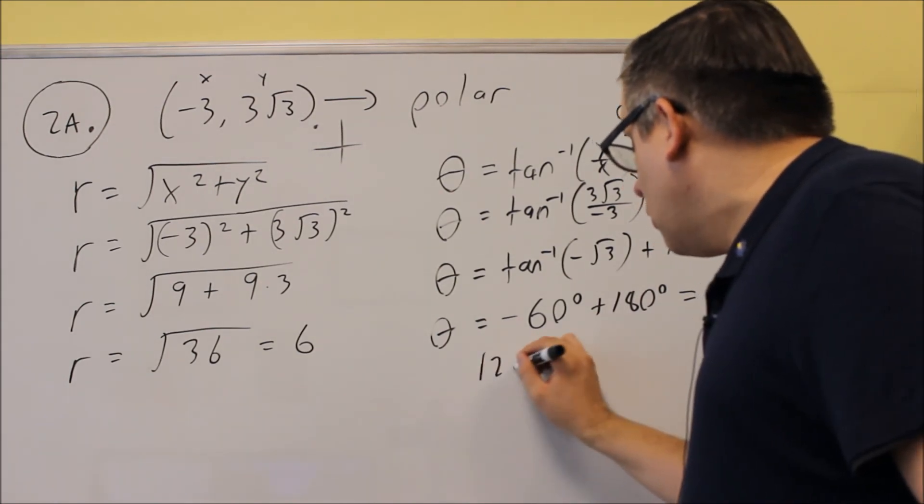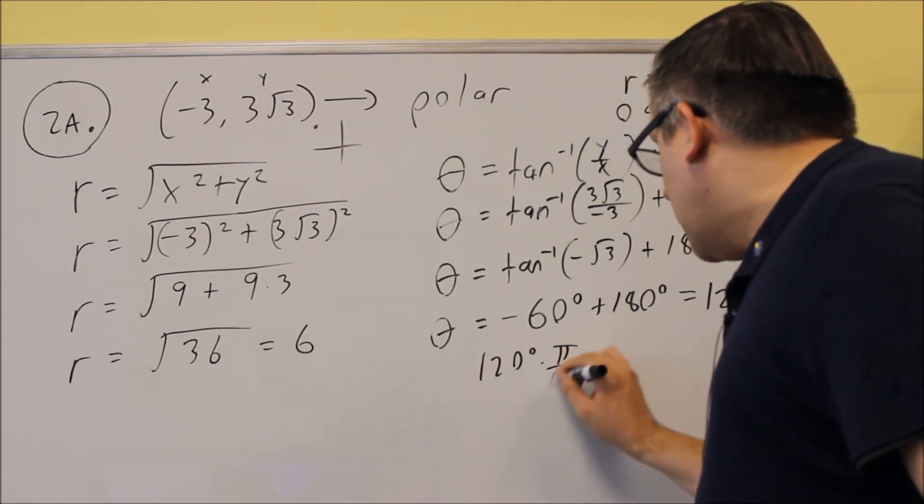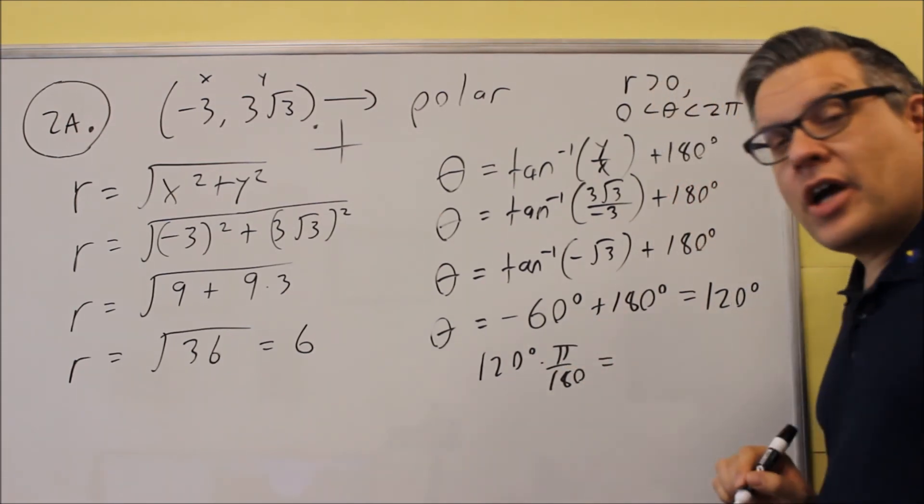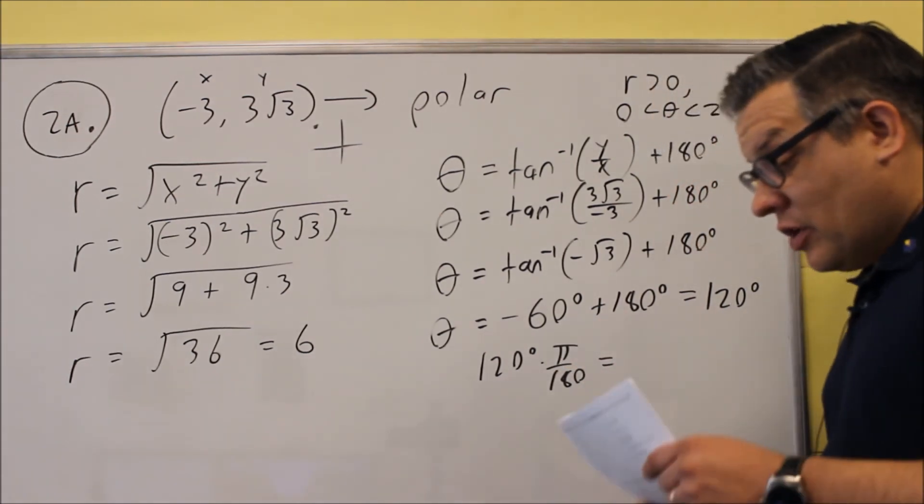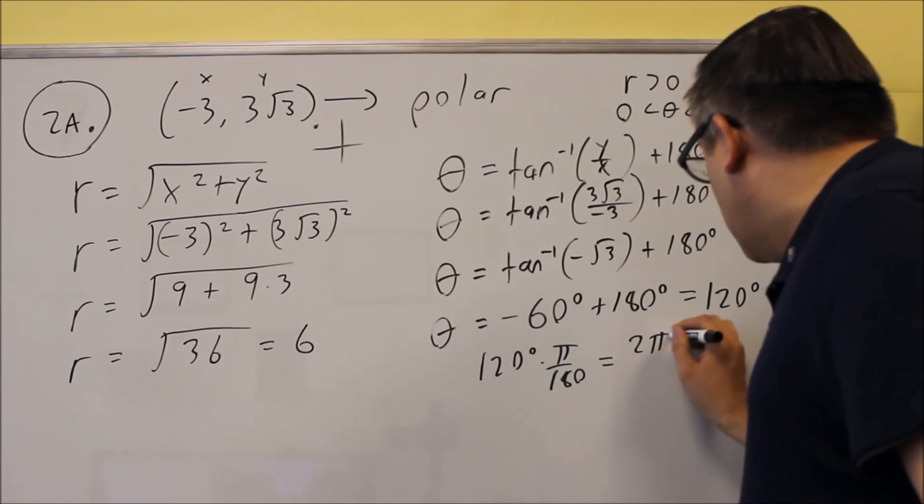Then if you just do 120 times pi over 180 to convert it back over, that's going to give you the answer 2 pi over 3.